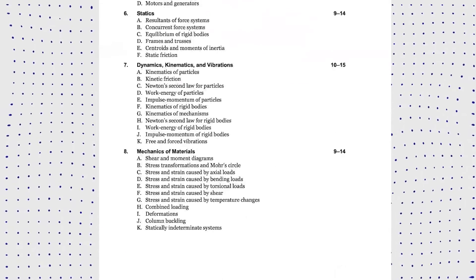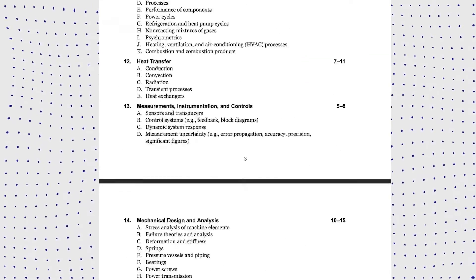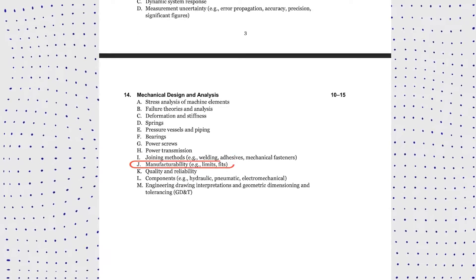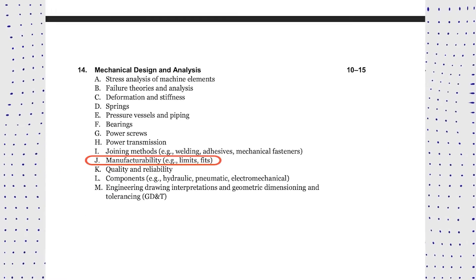Hello guys, welcome back to the FE Exam Review Series where we solve FE problems to help you pass your FE exam. In today's video we're going to do another Mechanical Design and Analysis section problem, specifically part J - Manufacturability. Let's dive in.